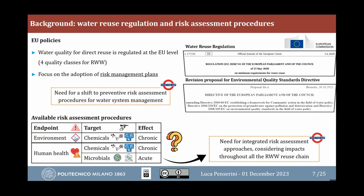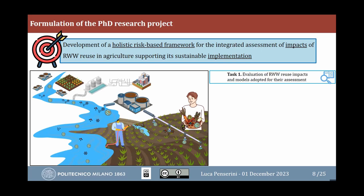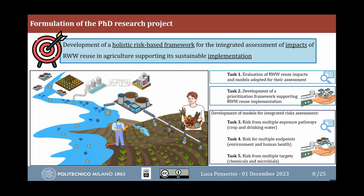The goal of my PhD is to develop a holistic risk-based framework to assess wastewater reuse and support its correct implementation. The work is articulated into five tasks. The first focuses on evaluating all impacts related to wastewater reuse. The second develops a prioritization framework to decide where to implement reuse. The third integrates different risk assessment approaches — covering multiple exposure pathways, multiple endpoints (environment and human health), and multiple targets (chemical and microbial). The first three tasks are already completed; this year I focus on the last two. The fourth task is being performed here in collaboration with Remy, Dominic, and Eric.